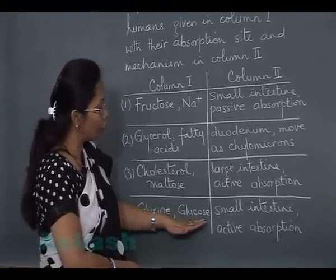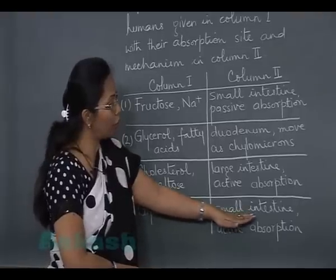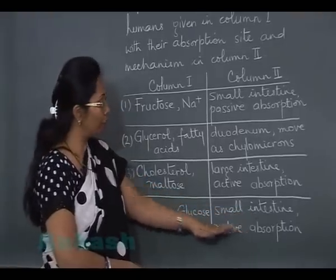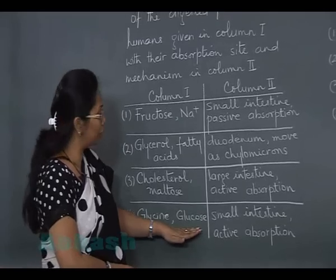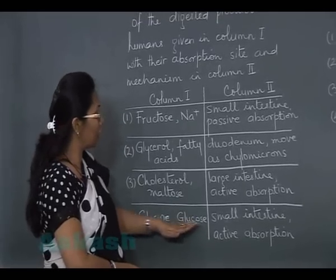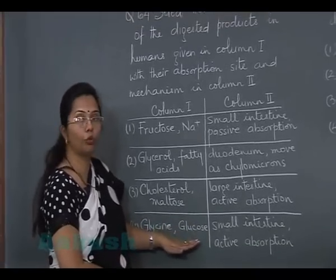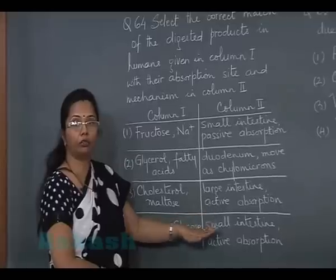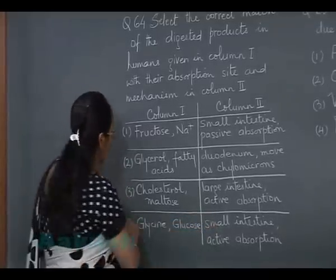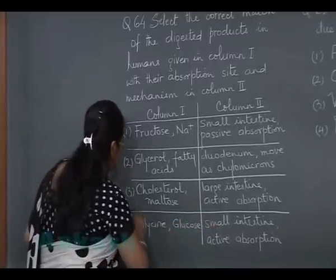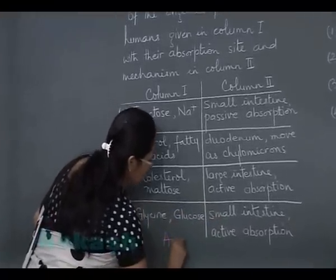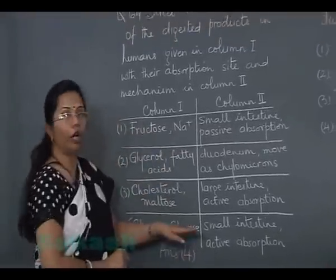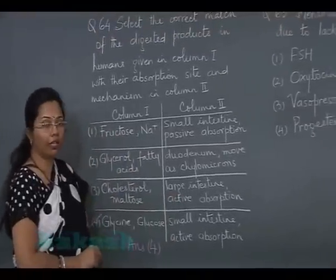Option four — glycine (an amino acid) and glucose absorbed in the small intestine by active absorption — is the correct choice. These are two very important molecules absorbed by expenditure of ATP. So the answer to question 64 is option four.